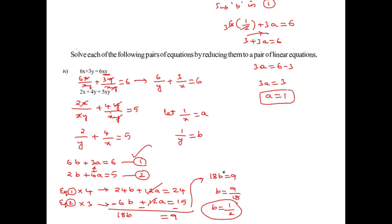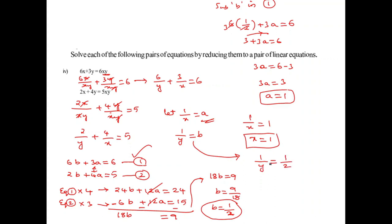We have A equals 1 and B equals 1 by 2. Substituting: 1 by x equals 1 so x equals 1. And 1 by y equals 1 by 2 so y equals 2. The required solution is x equals 1 and y equals 2.